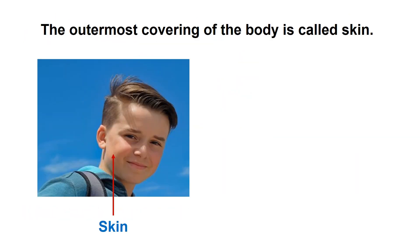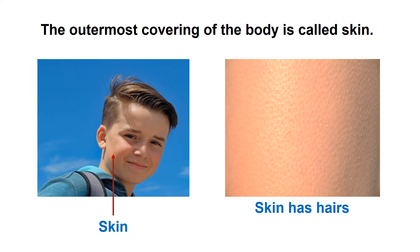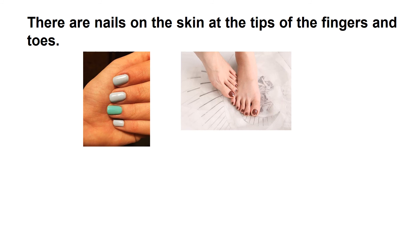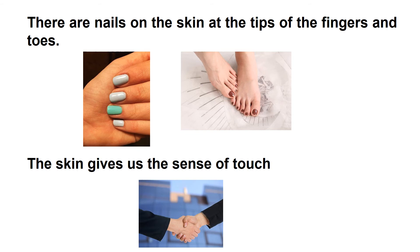The outermost covering of the body is called skin. Observe your skin — we can see that the skin has hair. There are nails on the skin at the tips of the fingers and toes. Also, the skin gives us the sense of touch. From this we can say that skin is an important sensory organ of the body.